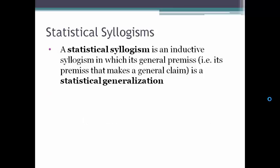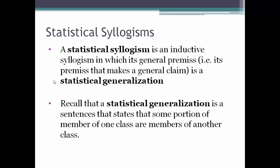A statistical syllogism is an inductive syllogism in which its general premise — the premise that makes a general claim — is a statistical generalization. Statistical generalizations are sentences that state that some portion of members of one class are members of another class.